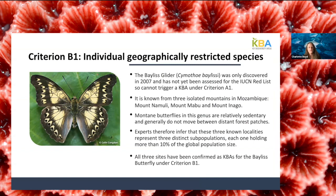As an example, the Bayliss glider was only discovered in 2007 and has not yet been assessed for the Red List, so cannot trigger a KBA under criterion A1. However, it's only known from mid-altitude forests on three isolated mountains in Mozambique — Mount Namuli, Mount Mabu, and Mount Inago. Montane butterflies in this genus are relatively sedentary and generally don't move between distant forest patches, so experts inferred that these three known localities represent three distinct subpopulations, each likely holding more than 10% of the global population. All three sites have been confirmed as KBAs for the Bayliss glider under criterion B1.